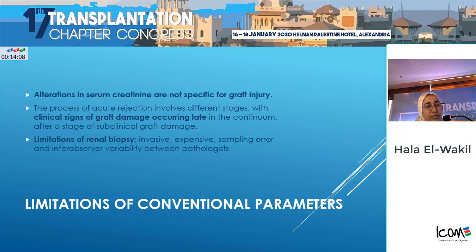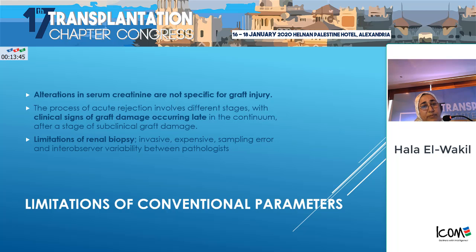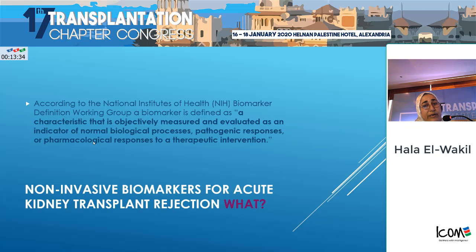Why are we talking about this? Are we in need of this? And what are these biomarkers? How can we extrapolate our research data to clinical practice? Starting with the requirement: yes, we need these biomarkers because of limitations of conventional parameters. Alterations in serum creatinine are not specific for graft injury. Clinical signs of graft damage occur late, and there is a long preclinical period of continuous damage we are unaware of, as well as the known limitations of renal biopsies.